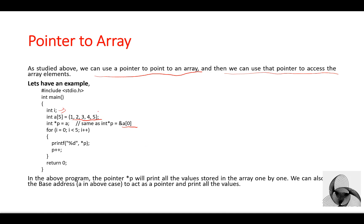p is a pointer that points to array a. We then apply a for loop: `for(i = 0; i < 5; i++)`. Inside the body of the for loop, `*p` will print all values stored in the array one by one. We can also use the base address to print all values. `p++` means the pointer moves to the next element in the array.